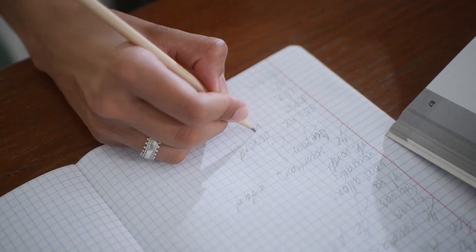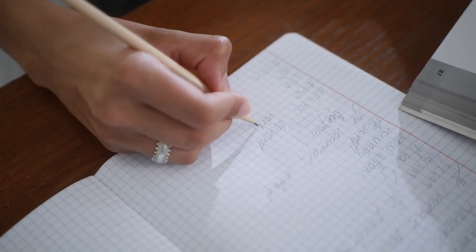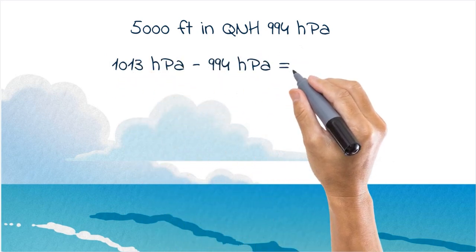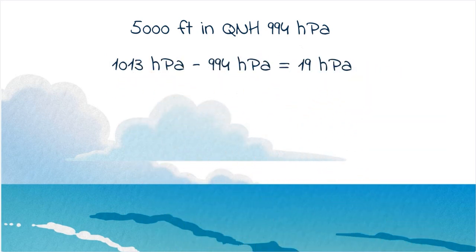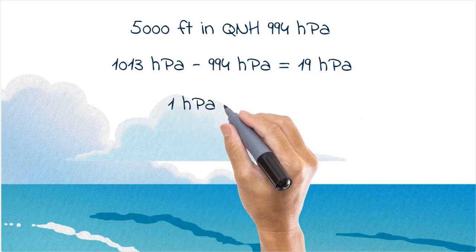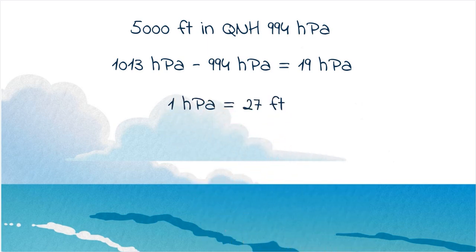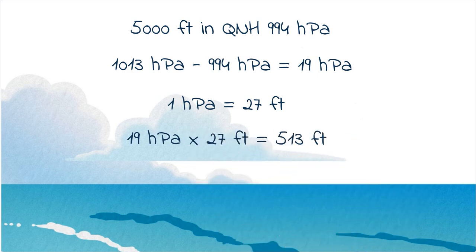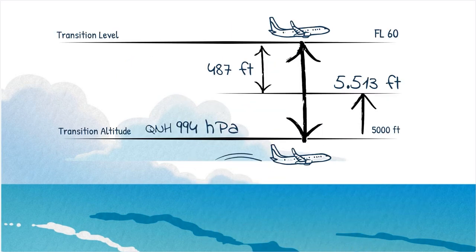First, let's calculate the difference between standard pressure and our QNH right now. 1013 hectopascals minus 994 hectopascals equals 19 hectopascals. On average, each hectopascal equals 27 feet in altitude. 19 times 27 equals 513 feet. This means that our transition altitude of 5,000 feet is actually 5,513 feet.